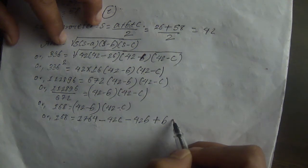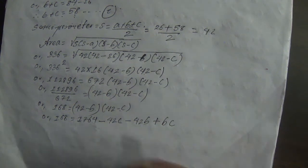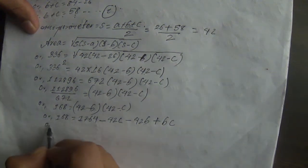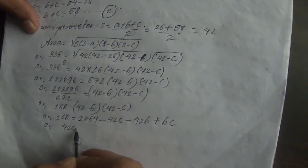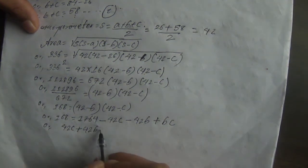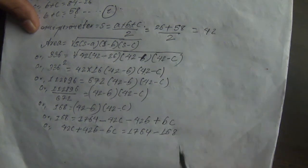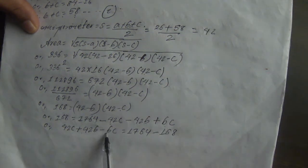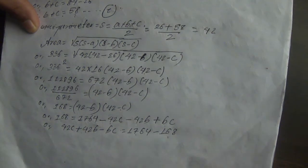Expanding (42 minus B)(42 minus C): 42 times 42 plus 42C plus 42B minus BC equals 1764. Moving terms to the left side: 42C plus 42B minus BC equals 1764 minus 168.